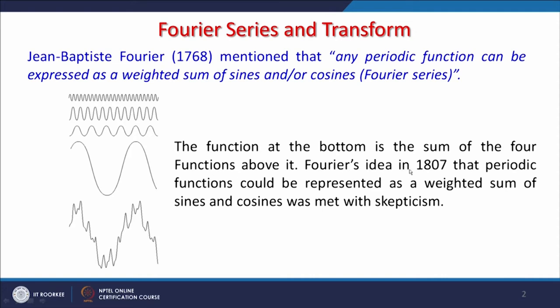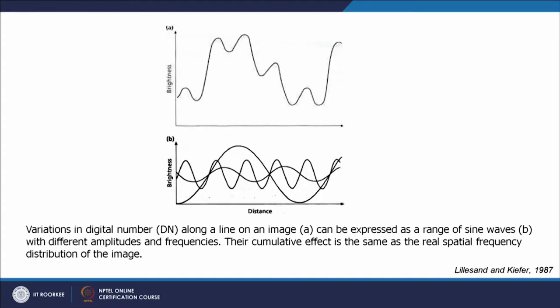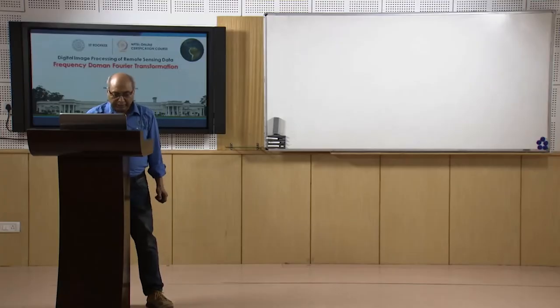Fourier's idea in 1807 — that periodic functions could be represented as a weighted sum of sines and cosines — was met with skepticism. People did not appreciate it at that time. But later on, in digital image processing, it has been adopted. Though we are mainly thinking in a linear fashion, for remote sensing data, which is two-dimensional, we can still apply this, as we will see very soon.